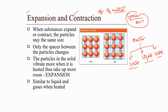First of all, I am going to explain what is the meaning of expansion. Expansion is nothing but an increase in the size or volume of matter. If the matter's size or volume increases, we call that expansion. But how expansion is happening — that is important, my dear students.